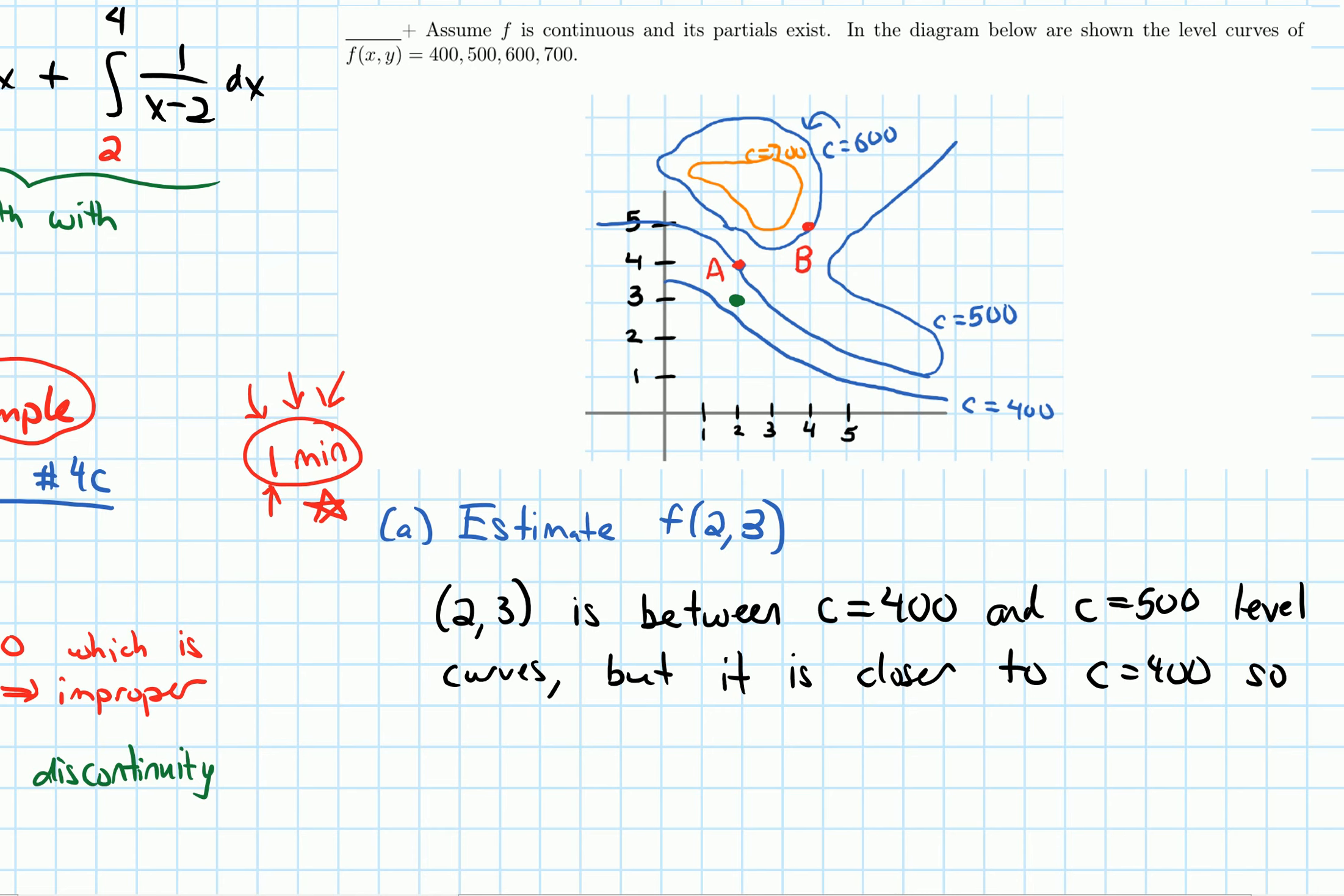So I'm ready to estimate. I estimate f of 2, 3 equals about 440, just a little bit under the halfway mark, which would have been 450. But it's an estimate, so a range of values may have been fine here.